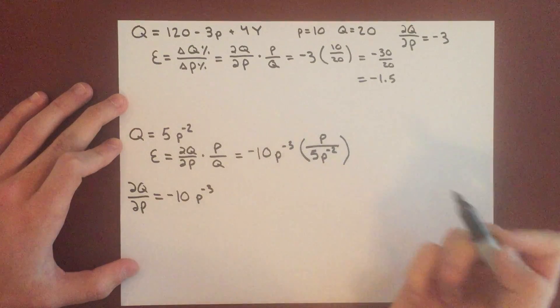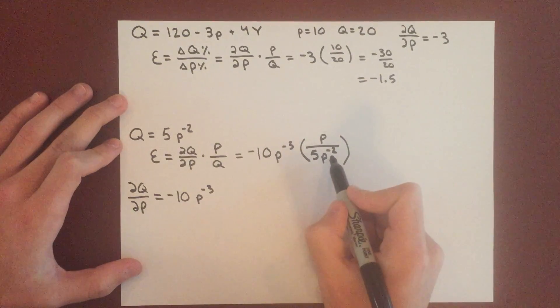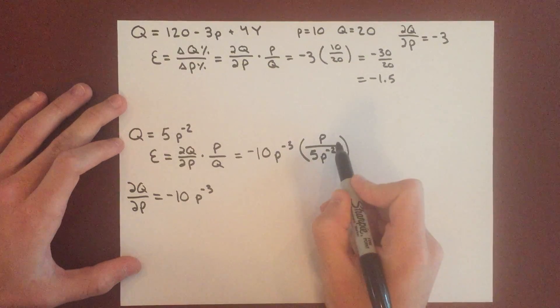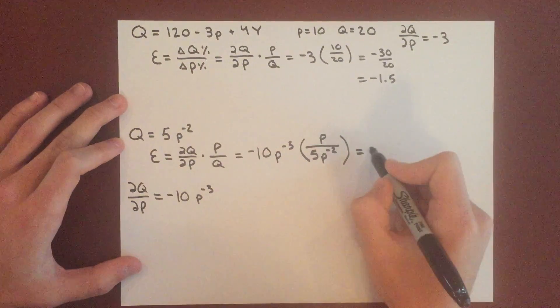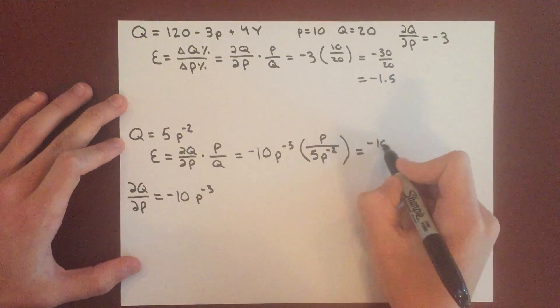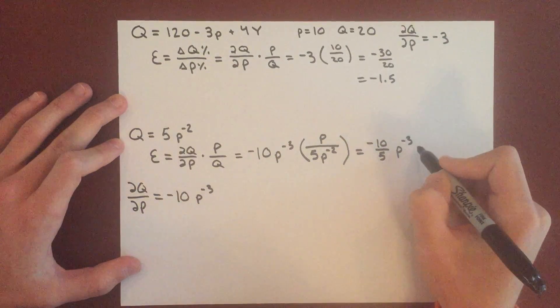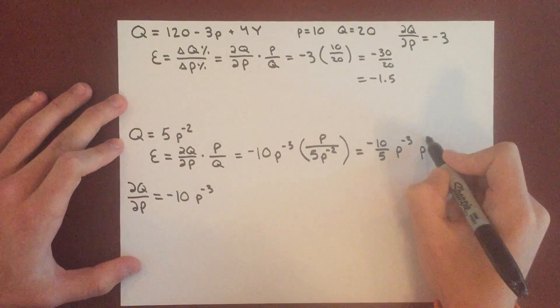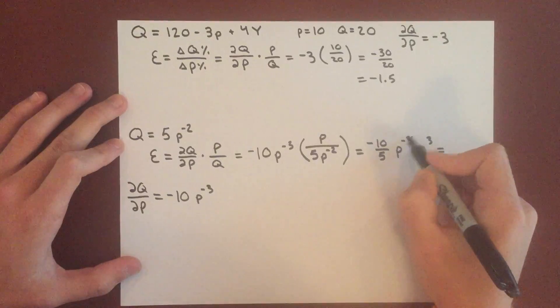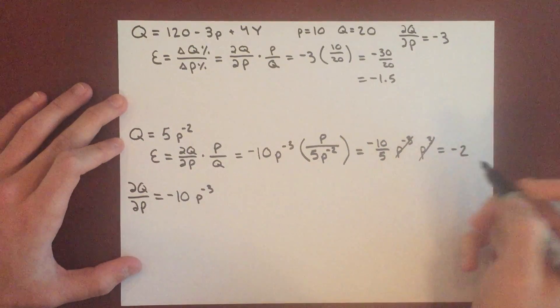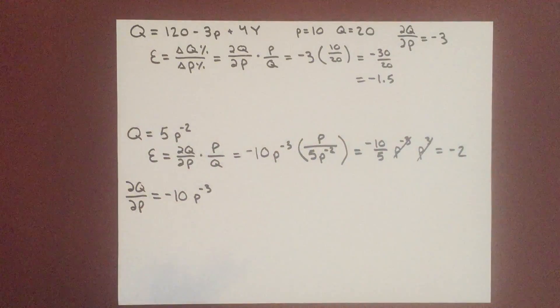second. Now this looks a little complicated, but remember this negative 2 can be brought into the numerator, so it's really negative 10 over 5 P to the negative third, just bringing this out, times P to the third. And so these P's cancel and we get negative 2 for our elasticity, which is really nice